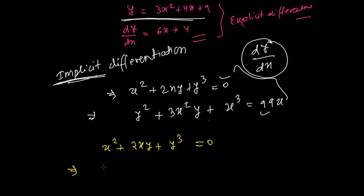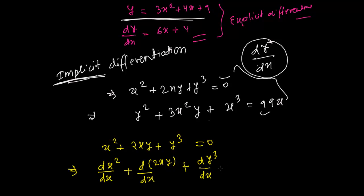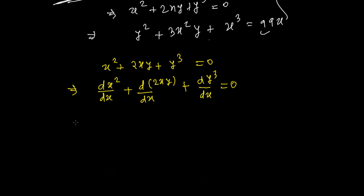We differentiate both sides with respect to x. So we take the derivative of x² with respect to x, plus the derivative of 2xy with respect to x, plus the derivative of y³ with respect to x, all equal to zero. For the first term, the derivative of x² with respect to x is 2x.